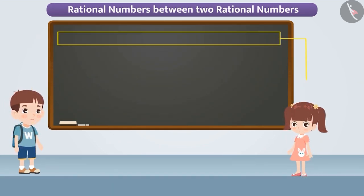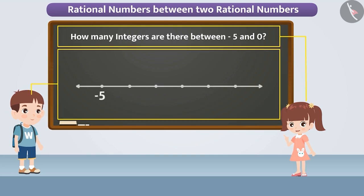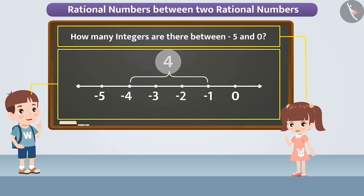Now it was Nisha's turn. She asked how many integers are there between minus five and zero. To get the answer, Amit counted the numbers minus four, minus three, minus two, and minus one — excluding minus five and zero — and gave the answer four.